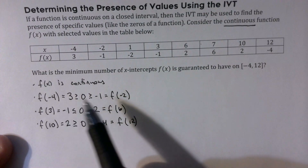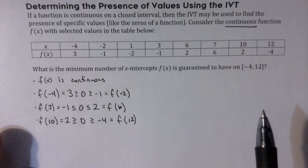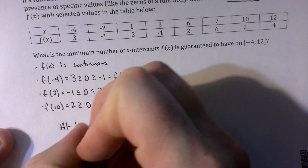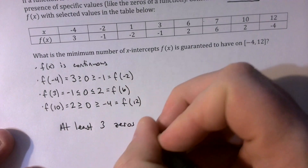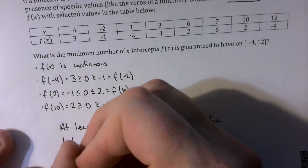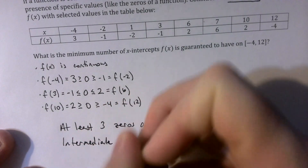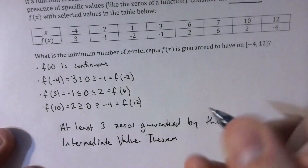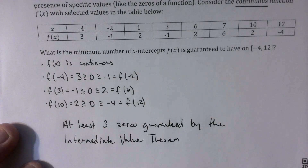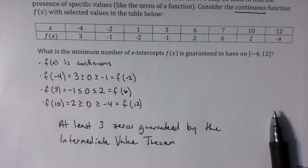In all three cases, we show that 0 is in between the two function values given. So we can say that on at least three occasions, there are at least three zeros guaranteed by the Intermediate Value Theorem. It could happen more than three times, but we can guarantee from this table of values that the function has at least three x-intercepts, guaranteed by the Intermediate Value Theorem.